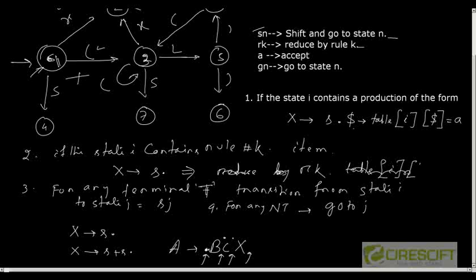After creating this LR0 parse table, the job is to parse the given input string using bottom-up parsing by looking at that LR0 parse table. At a given point of time I look at the current token and decide which action I should follow. Today we will learn what we call as a limitation of a LR0 parser.